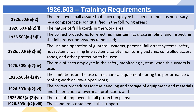The role of each employee in the safety monitoring system when this system is used; the limitations on the use of mechanical equipment during the performance of roofing work on low-sloped roofs; the correct procedures for the handling and storage of equipment and materials and the erection of overhead protection; and the role of employees in fall protection plans. The standards contained in this subpart.